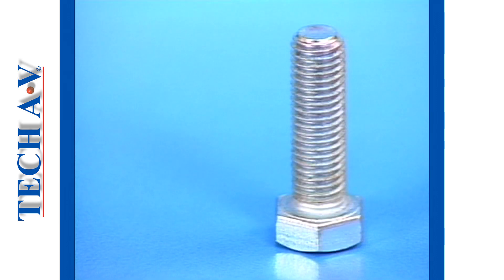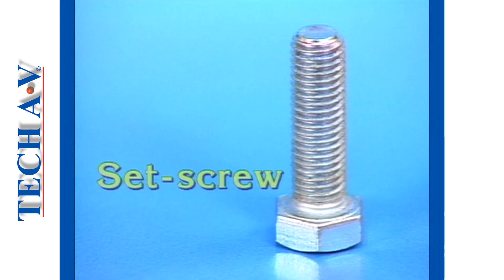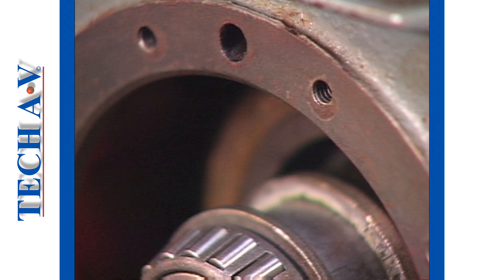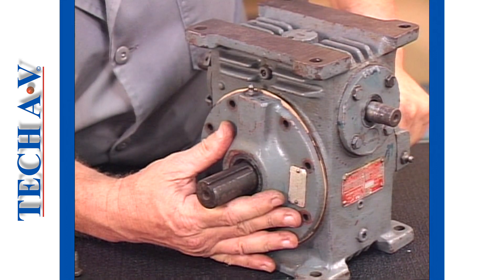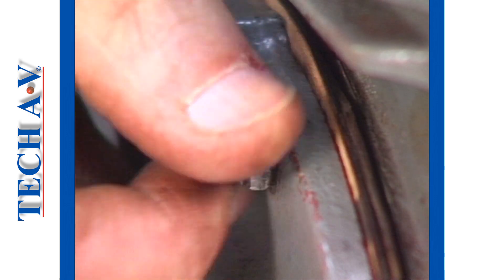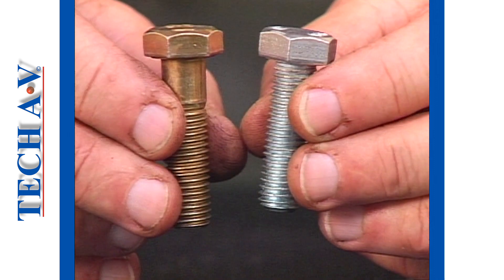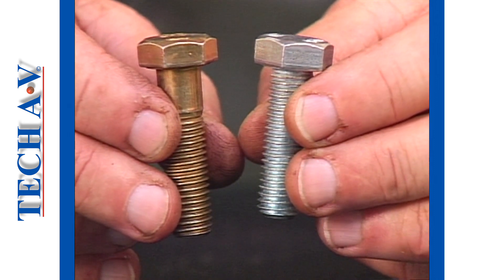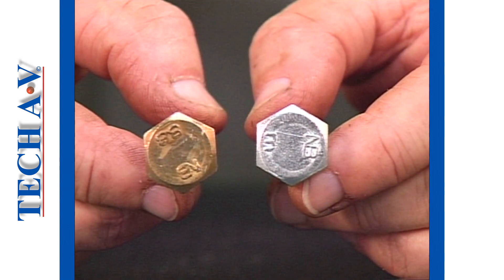A nut containing matching threads and also of hexagon shape engages the bolt's threads when turned onto the threaded section, as demonstrated. Our next type is much like a bolt, but notice that threads are cut for the whole length of the shank. Such a fastener is known as a set screw. Set screws are designed to be used directly into pre-threaded holes, usually in a major component, such as this gear reduction housing. Both the bolt and the set screw types have hexagon shaped heads; artisans often call these hex bolts or hex screws. A hexagon has six flat sides or flats.